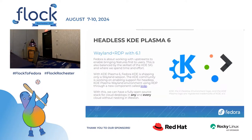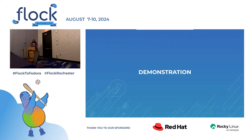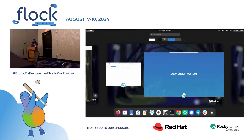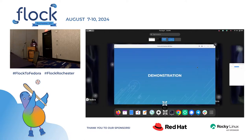Now let's talk about how KDE Plasma's approach to headless is going to be — Wayland and RDP with Plasma 6.1. If you have Fedora KDE 40, at GA we had 6.0, but after running an update you'll upgrade to 6.1 and have a new component called KRDP that you can install. Install KRDP, configure it, and you have a fully open source stack for cloud desktops in any cloud without nesting in Weston — it operates like a fully native environment. And this was already a remote desktop the whole time — yes, this is GNOME, but it shows the shock value.